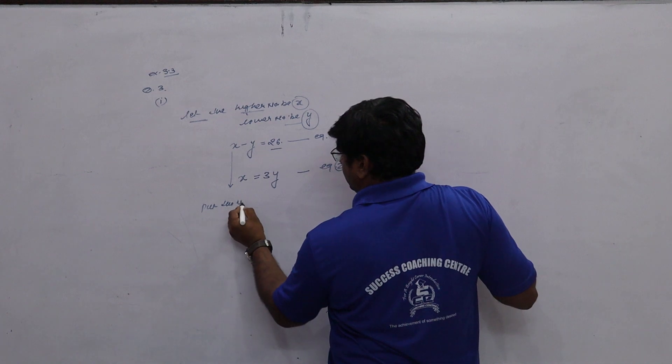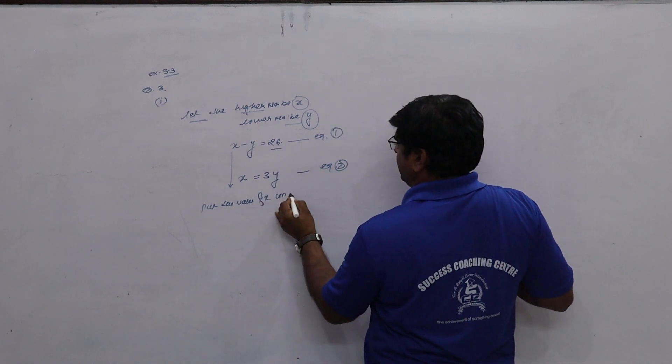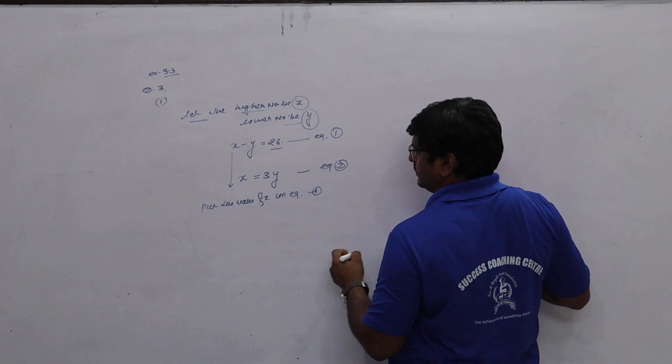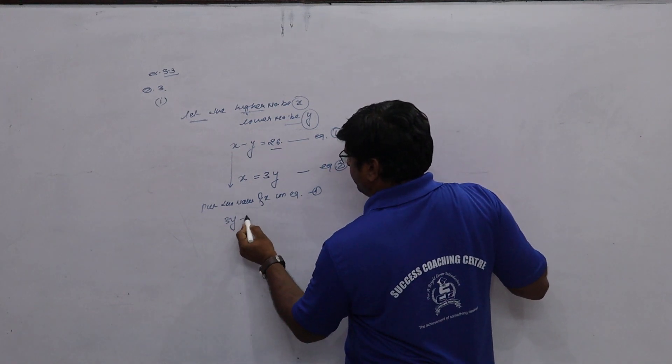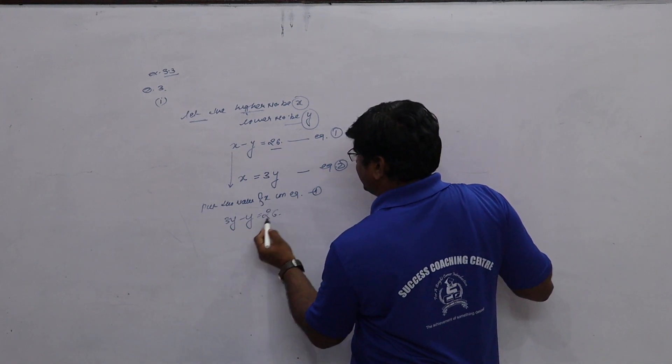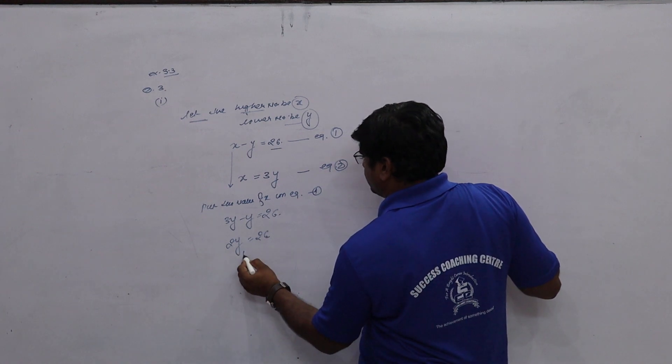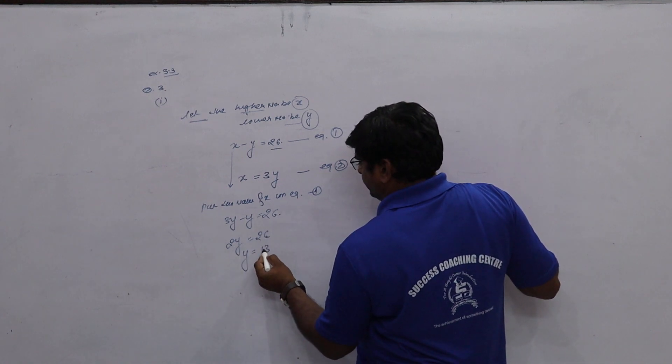Put the value of x in equation first. 3y minus y is equal to 26. 2y equal to 26. y is equal to 13.